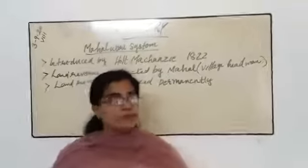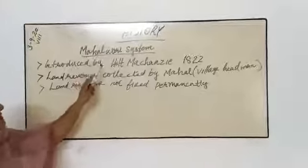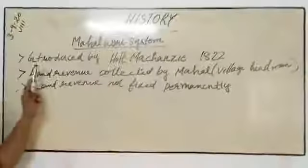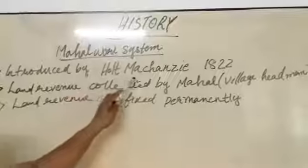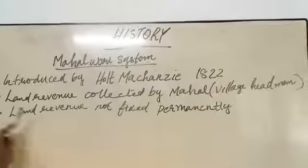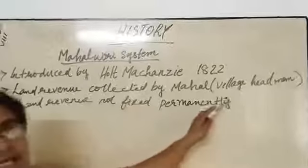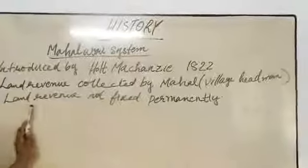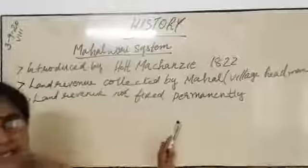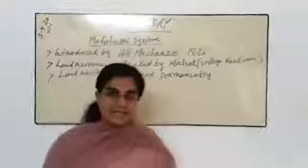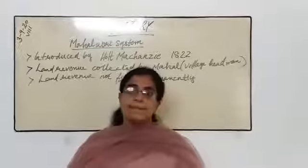Now I have revised my today's portion. Mahalwari system that is land revenue system introduced by Holt Mackenzie in 1822. In this system the land revenue collected by Mahal. Mahal means village headman. Then the land revenue was not fixed permanently. Today I am winding up my portion. Then see you next class. Bye.